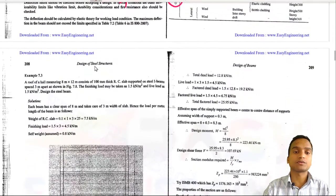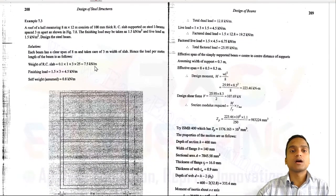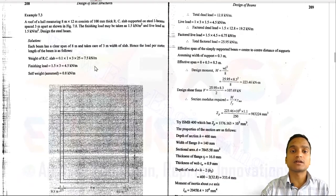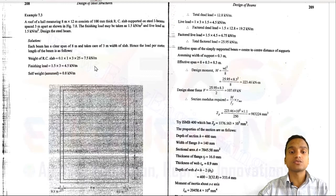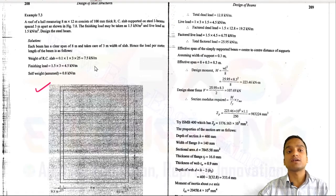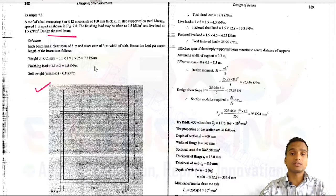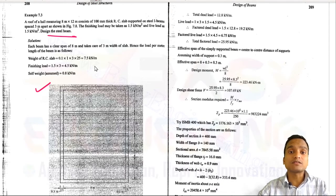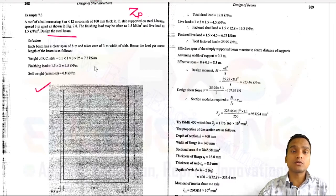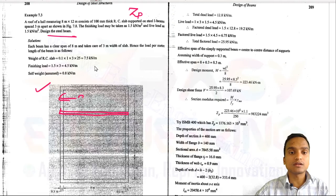In this numerical, a roof of a hall measuring 8 m by 12 m consists of 100 mm thick RCC slab supported on steel I-beams spaced 3 m apart. The finished load is 1.5 kN/m² and live load is 1.5 kN/m². We must design the steel beam. The beam section spans 8 m clear, and the effective span will be slightly more, accounting for support widths.